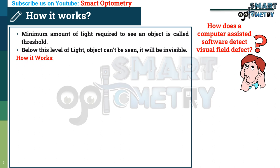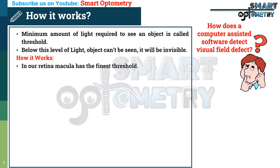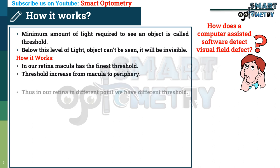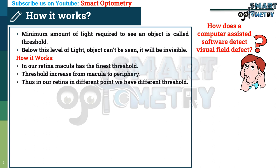Now let's see how it works. In our retina, the macula has the finest threshold — even with very dim light we are able to see objects. Threshold increases from macula to periphery and we need brighter light to see objects. Thus, in our retina, at different points, we have different thresholds to see any object.